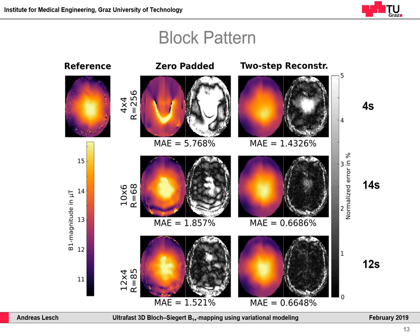Here you can see the reconstruction results achieved by retrospectively undersampling a fully sampled reference with our two-step reconstruction method for different block sizes and corresponding acceleration factors. The results are compared to a zero-padded solution with the same amount of data. The error maps show the error compared to the fully sampled reference. You can see that for each pattern size, a huge improvement can be gained using our two-step reconstruction, even for the very low case of only four times four encodings in k-space center, where a good estimate of the B1 field distribution can be reached.